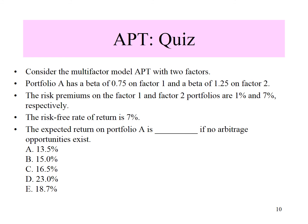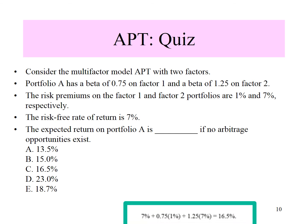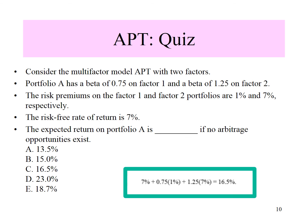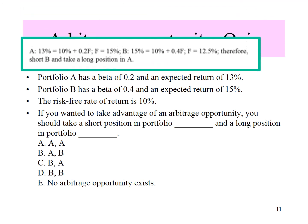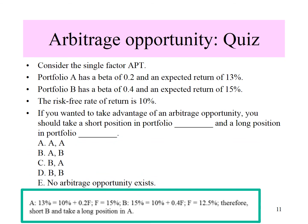Let's apply the formula of APT in this example. The answer is C. Let's try another example. Here we have portfolio A and B. If you want to take advantage of an arbitrage opportunity, you should take a short position in portfolio B and a long position in A. This is because A is undervalued and B is overvalued when they are exposed to the same risk factor F.